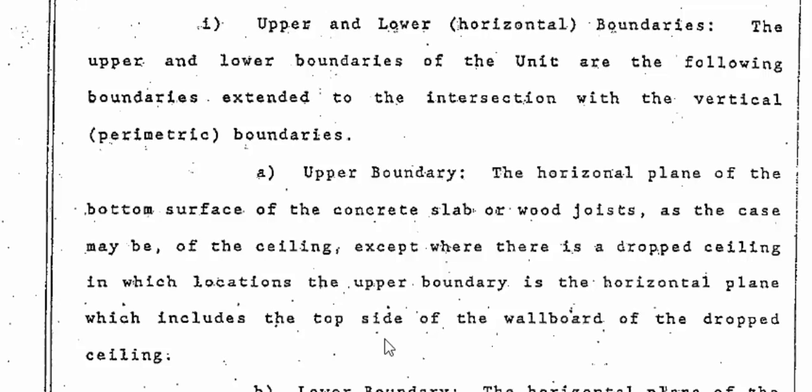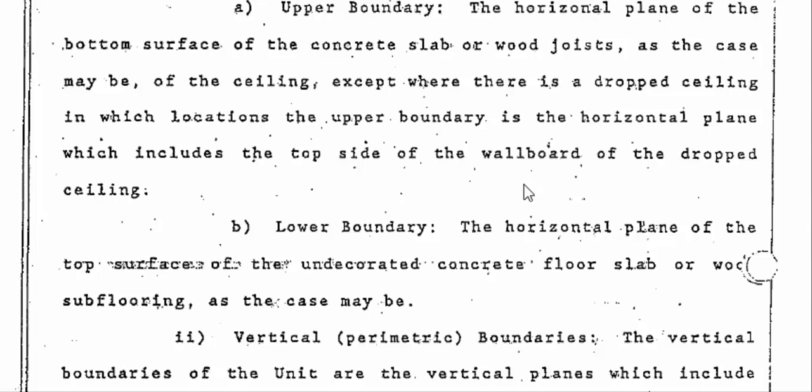It says the upper boundary is the horizontal plane of the bottom surface of the concrete slab or wood joist — as the case may be — of the ceiling, except where there is a drop ceiling, in which locations the upper boundary is the horizontal plane which includes the top side of the wall board or the drop ceiling. Sounds confusing — I promise you it's not. It's real simple to understand. Your lower boundary is the horizontal plane of the top surface of the undecorated concrete floor slab or wood sub-flooring, as the case may be.